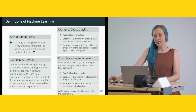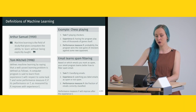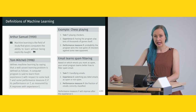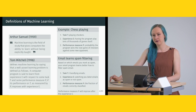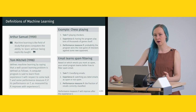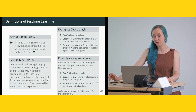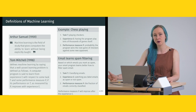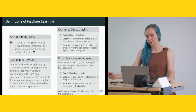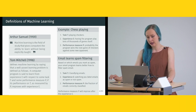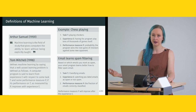Another common example is email spam filtering. Based on which emails you mark as spam, your email program learns to filter spam better. Task T is classifying emails as spam; experience E is watching you label emails as spam or not spam; performance measure P is the fraction of emails correctly classified. If it marks something as spam incorrectly and you correct it, or it misses a spam email and you flag it, the performance measure P will improve if the algorithm is learning.